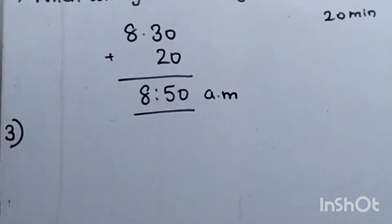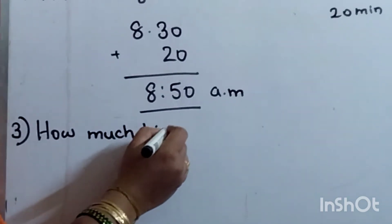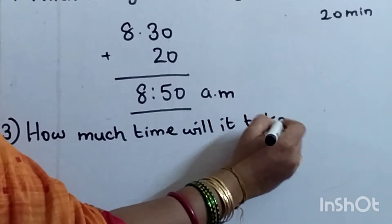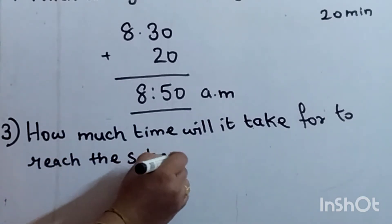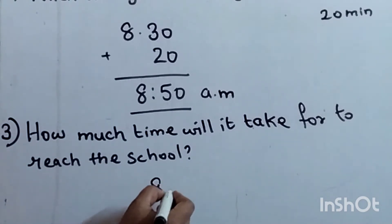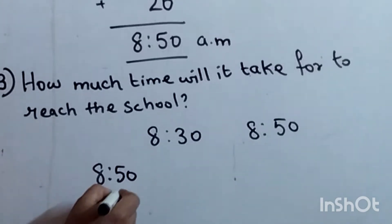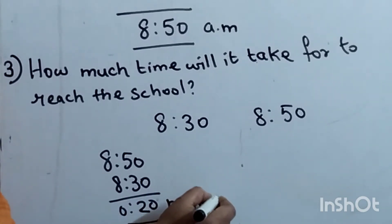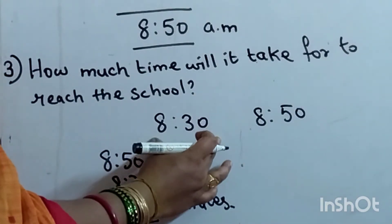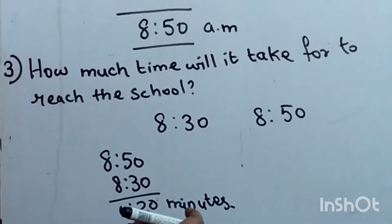Third question: how much time will it take for you to reach the school? I start at 8:30 and reach the school at 8:50, so 8:50 minus 8:30 equals 20 minutes. It will take 20 minutes for me to reach the school.